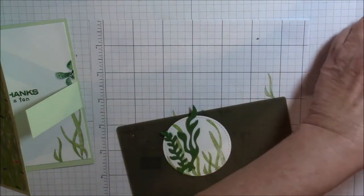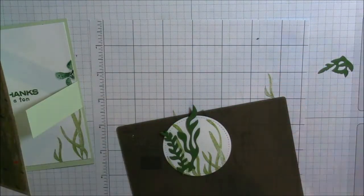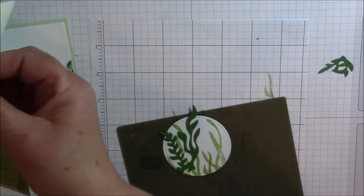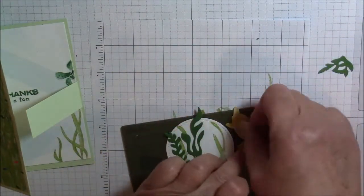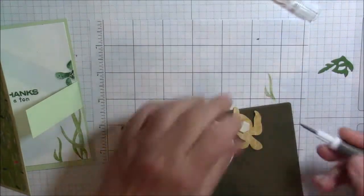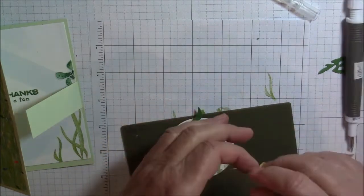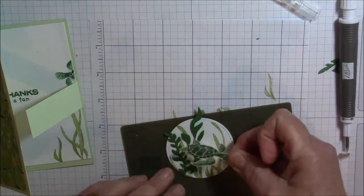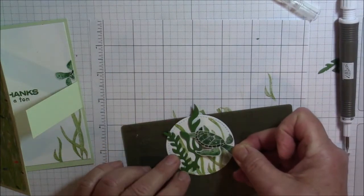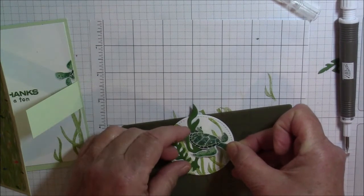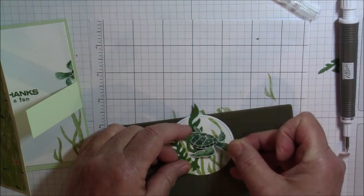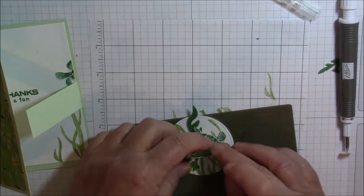Now we have our turtle. I do want to secure that with a dimensional. So we will flip him over. And I do want his leg coming from behind so like he is swimming in between the grasses. Just like that.